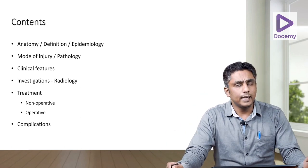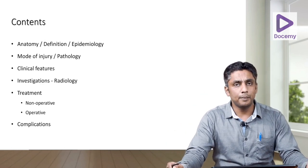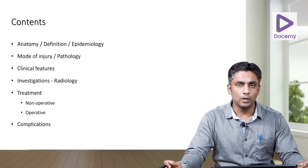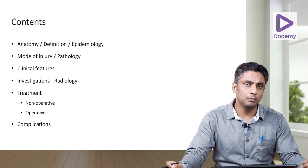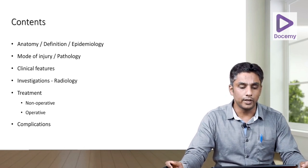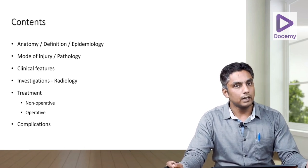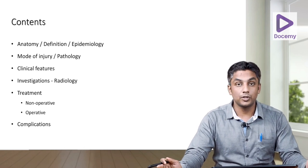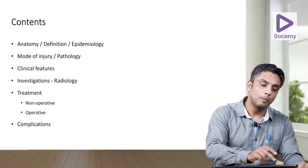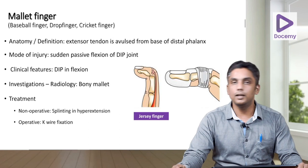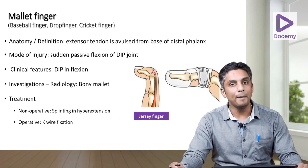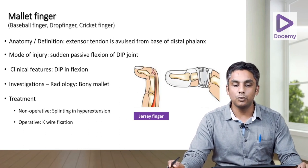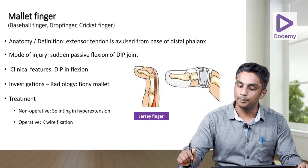Your content covers anatomy, definition, epidemiology; in case of trauma you have to add the mode of injury, the pathology in case of cold disorders, clinical features, investigations, management — surgical or non-surgical — and complications. Now right away we will go to mallet finger. What is a mallet finger? It's otherwise known as a baseball finger, drop finger, or cricket finger.